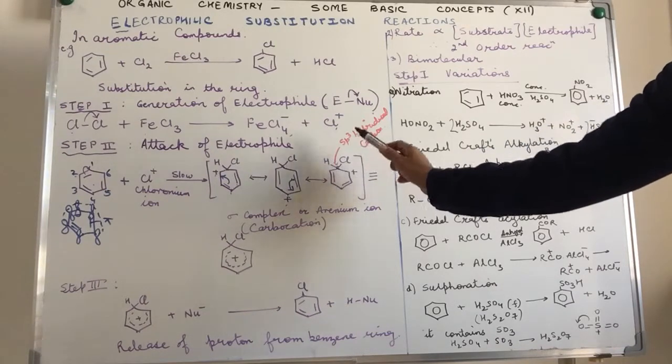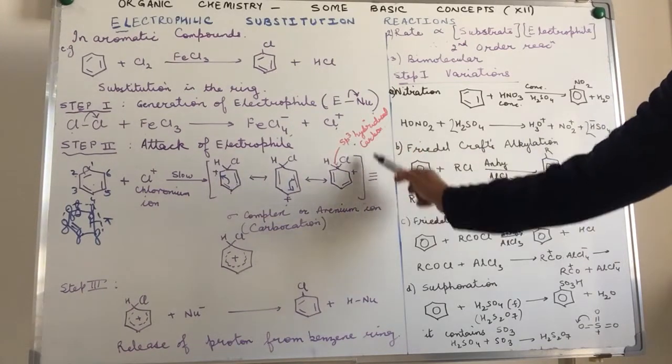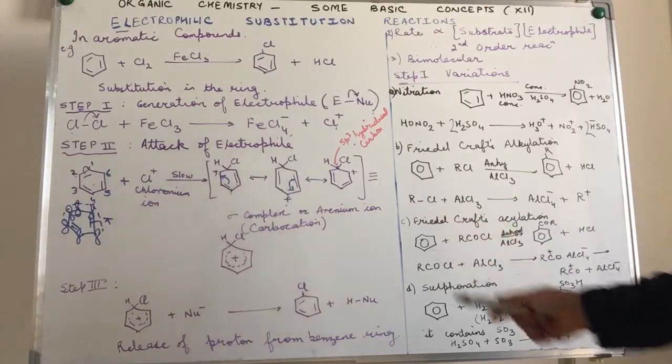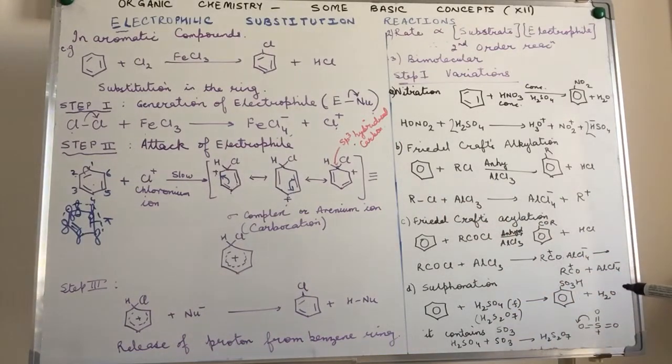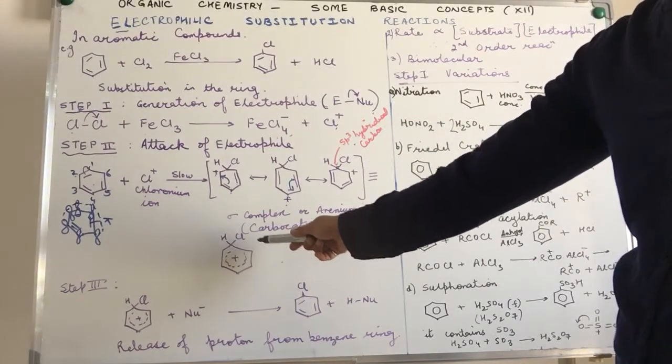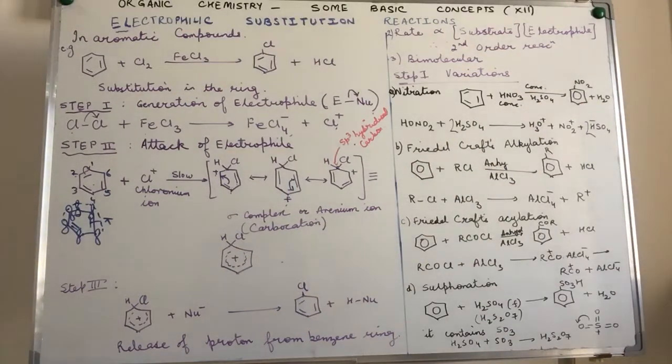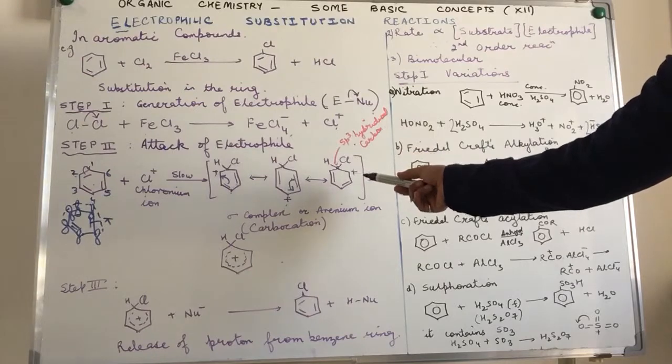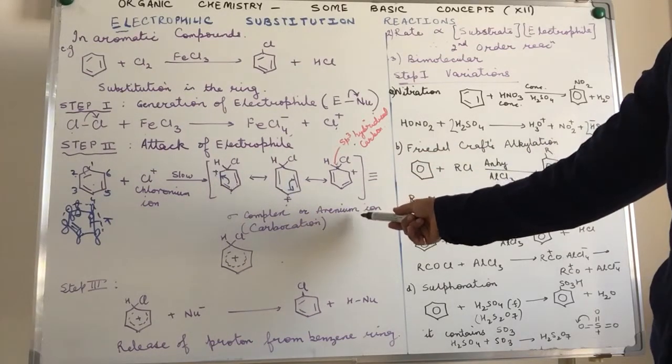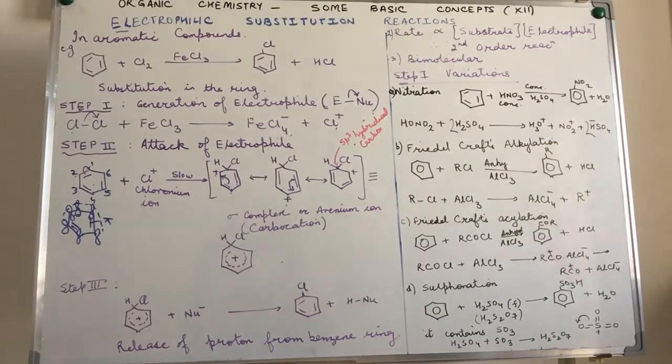Notice this particular carbon has four groups attached to it, so it's sp3 hybridized. Overall, this species is positively charged and we are talking about canonical structures. The intermediate is represented by the resonance hybrid. This intermediate form is what we call the sigma complex, or arenium ion, or aryl ion. We've got a carbocation in the form of a ring.